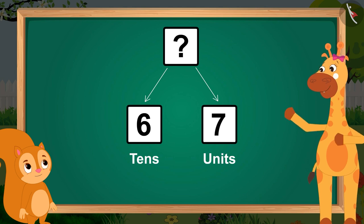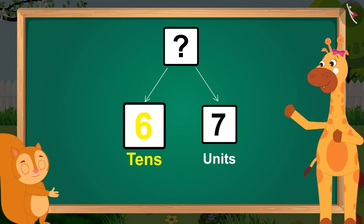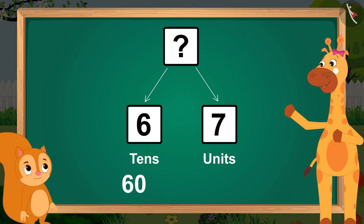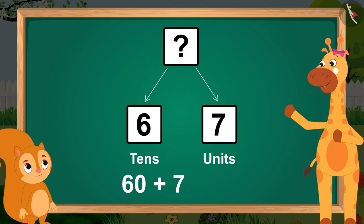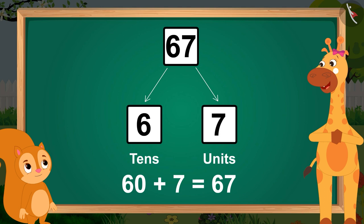Here, there are six tens, which makes sixty, and seven units, which make seven. Sixty and seven will become the number sixty-seven. Correct answer, Gaffee.